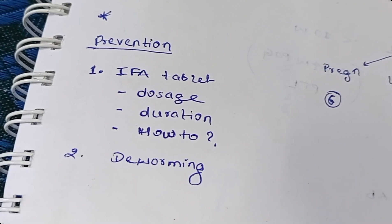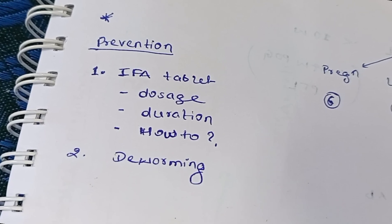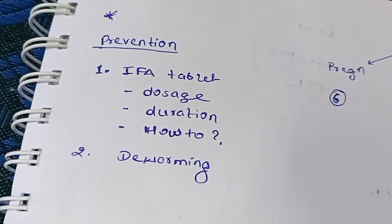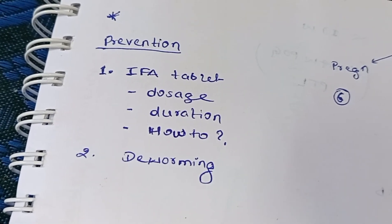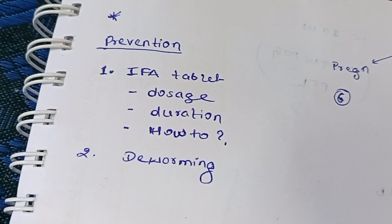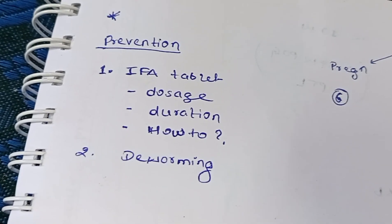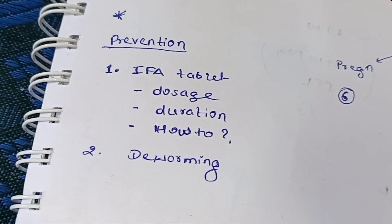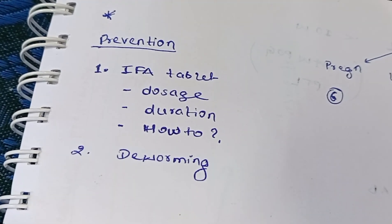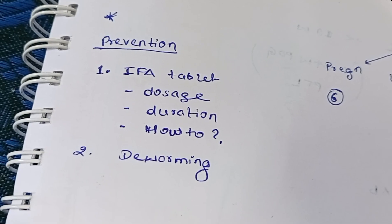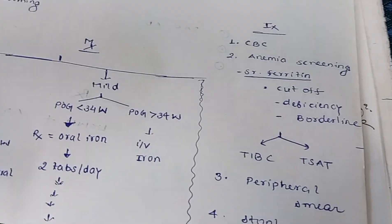The second prevention method is deworming. Worm infection is seen in pregnant mothers, so in the second trimester, across India, tablet Albendazole 400 milligram is given to every pregnant female.